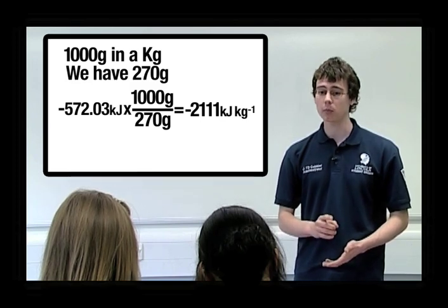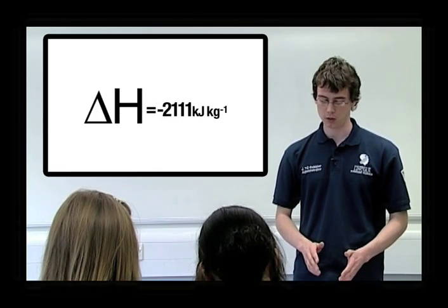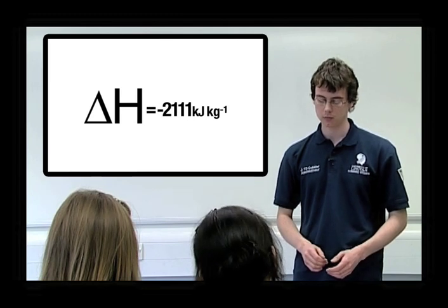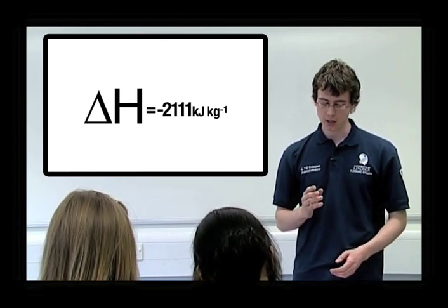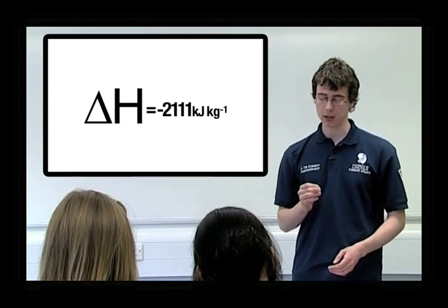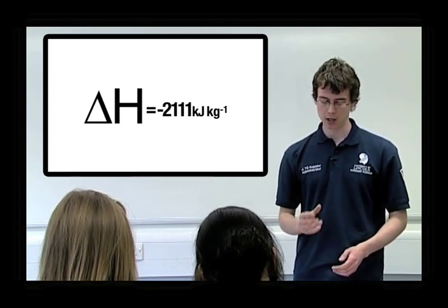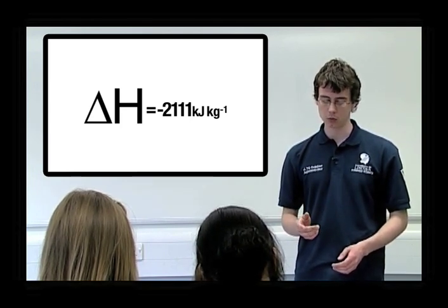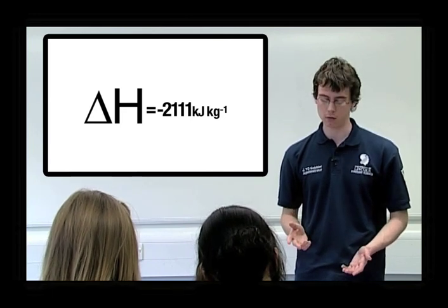This is the enthalpy change, or delta H, per kilogram. Is this number important? Well, yes, actually it is. You see, we now know how much energy is released per kilogram, so we can work out how much energy was released from the amount of powder we used, which was 1.5 grams.